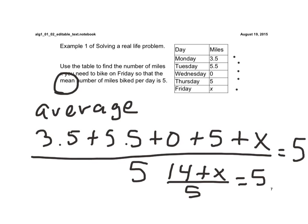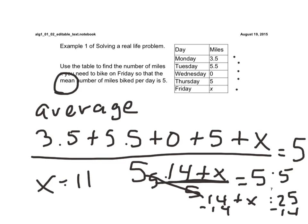Now we're ready to solve this. In this problem, since the whole top is being divided by 5, to undo that, we have to multiply both sides of this equation by 5 first. Those divide out, and we get 14 plus x is equal to 25. And now we solve for x by subtracting 14, and we get x is equal to 11. So for us to average 5 miles per day for biking, we would have to make sure that we rode for 11 miles on Friday.